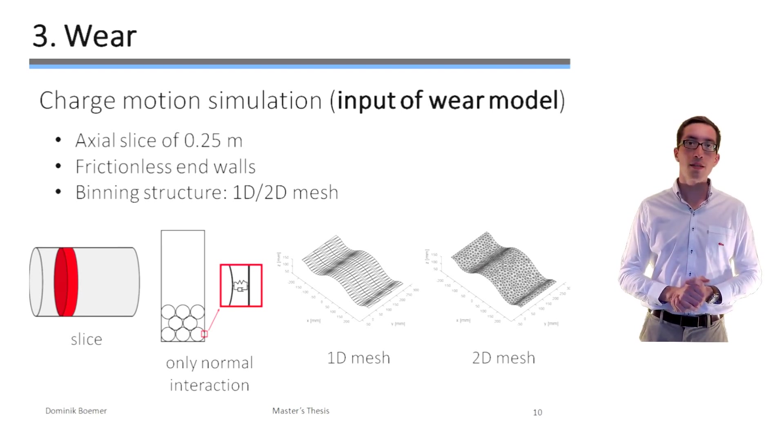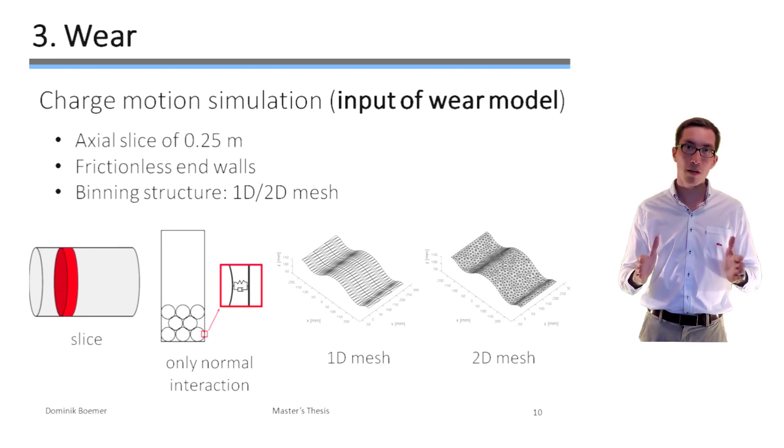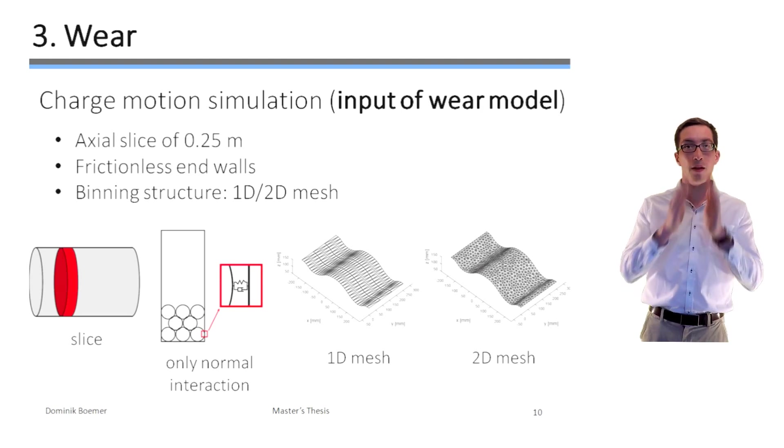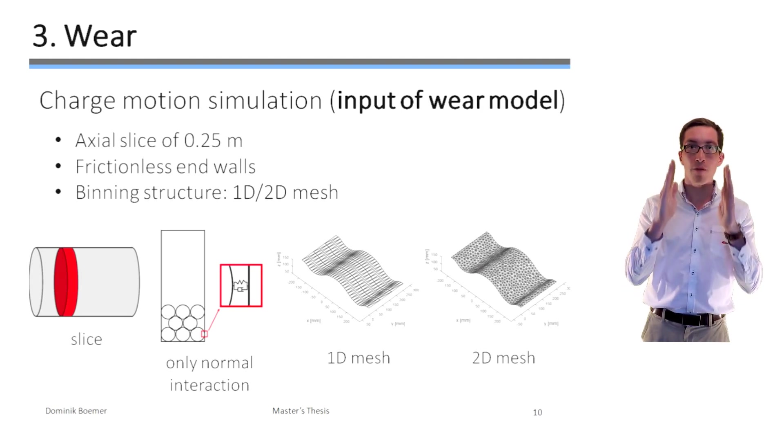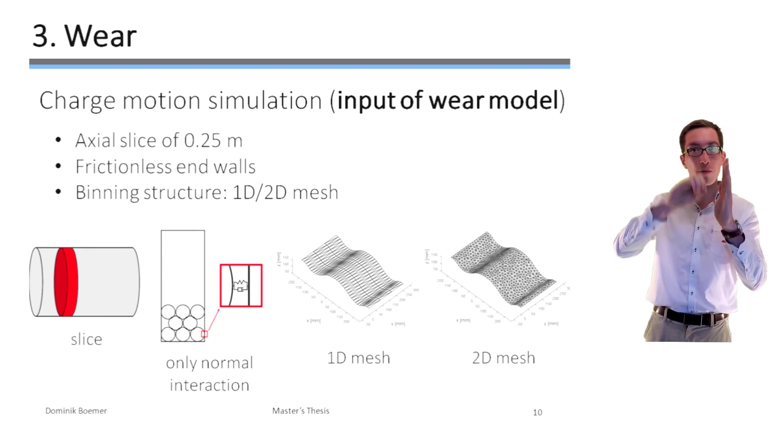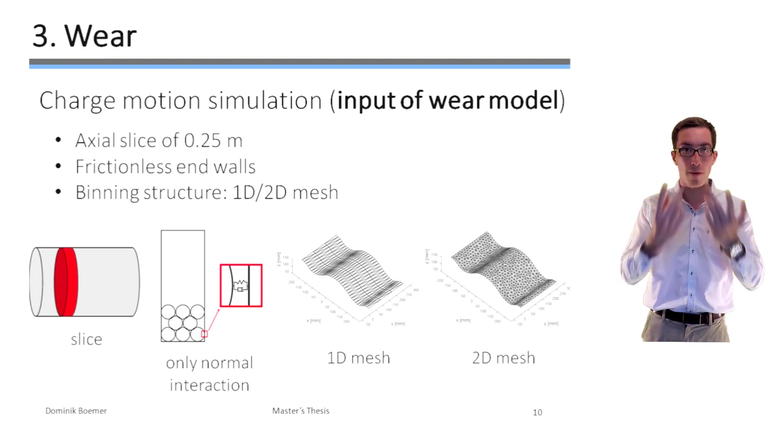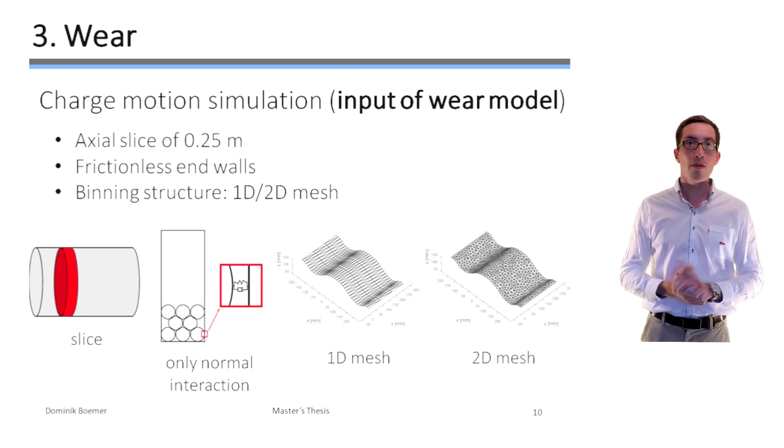The real mill, or at least the first chamber of the tube mill, contains however about 100,000 bolts. And this number of elements would require several days of computation time. Therefore, only an axial slice of 0.25 meters was simulated with frictionless end walls in order to prevent the board from leaving the mill and without inducing any tangential interaction.